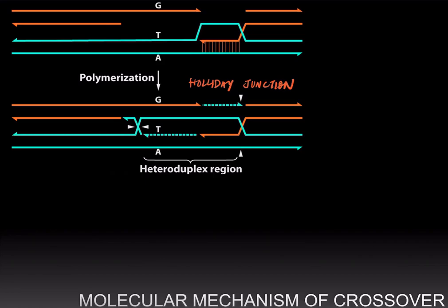and now the cyan non-sister strand is base pairing with the orange non-sister strand, you have a position in the top two molecules where a G is pairing with a T, and that's known as heteroduplex DNA. And this region that contains this heteroduplex DNA is called a heteroduplex region.